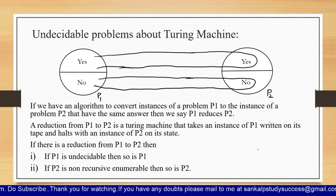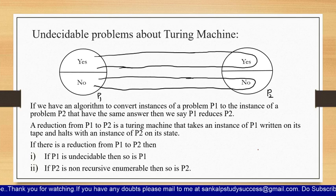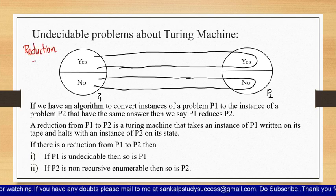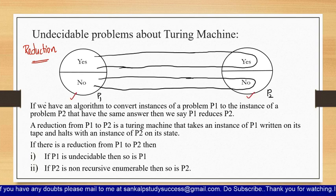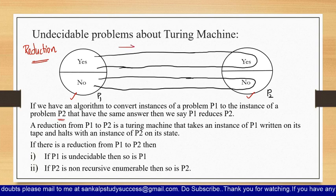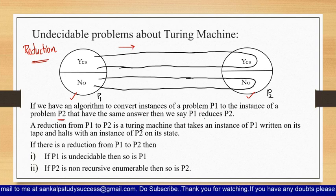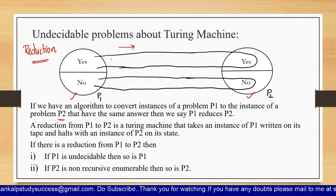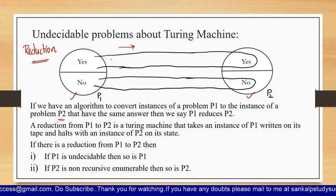Now coming to undecidable problems about Turing machines. This topic involves the concept of reduction. If we have an algorithm to convert an instance of P1 to an instance of P2 with the same answer, then we say P1 reduces to P2. This means whether you calculate with respect to P1 or P2, if both give the same answer, it is called a reduction.